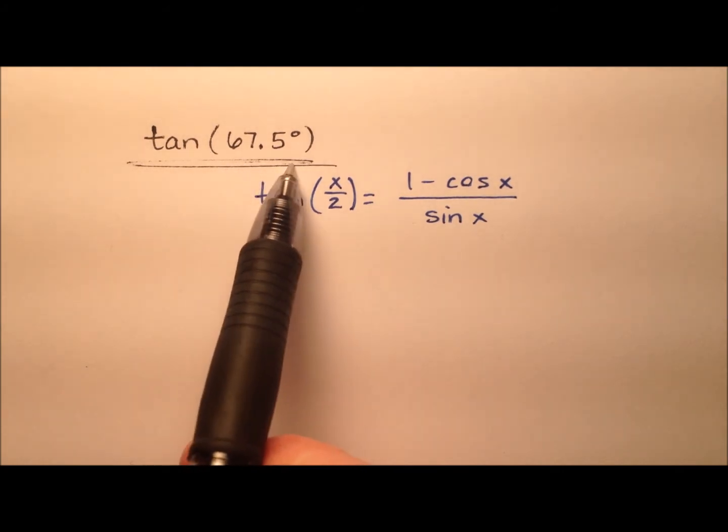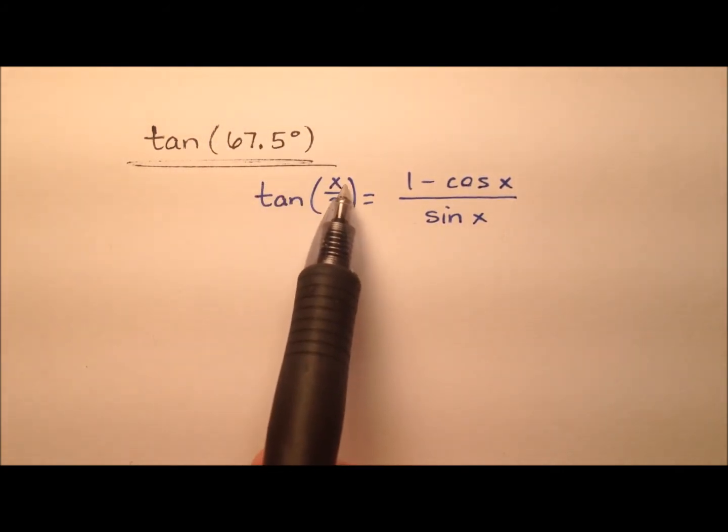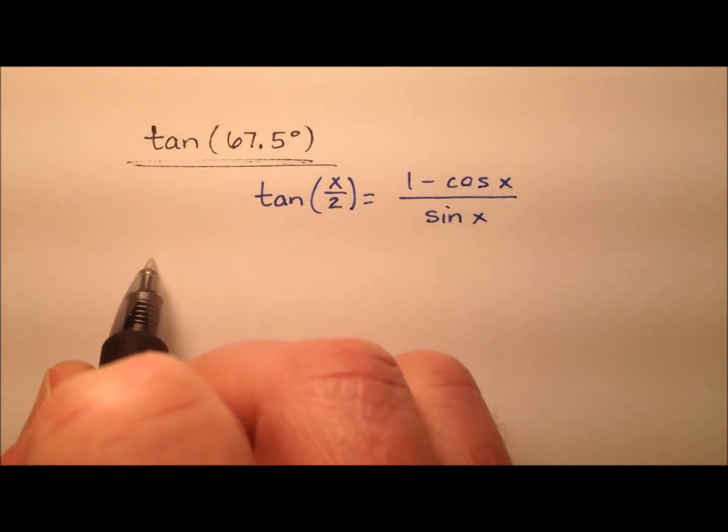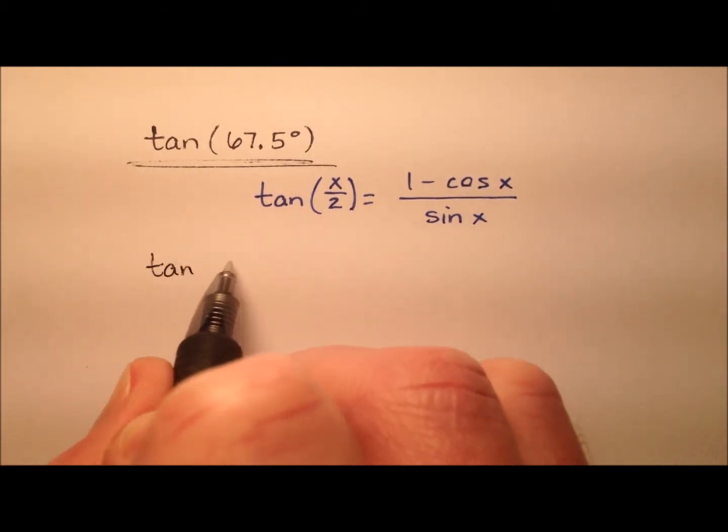So it looks like to get started, we're trying to find 67.5 degrees. I need some angle x that when I cut it in half, I get 67.5. So that's going to be 135 degrees.